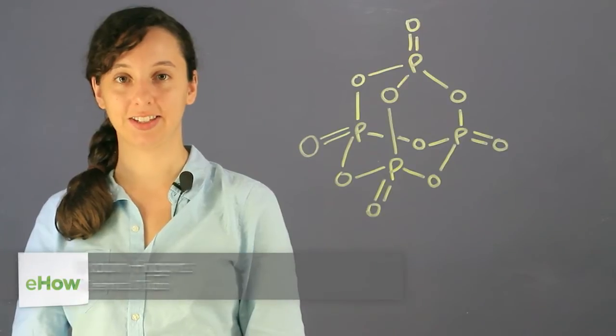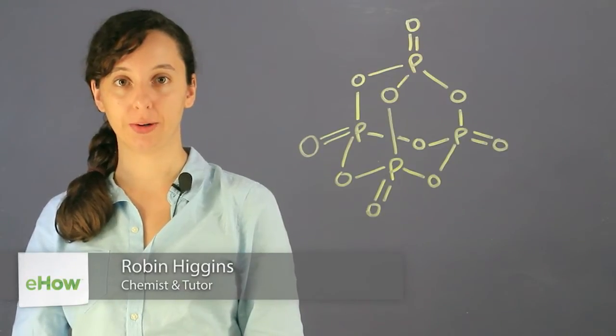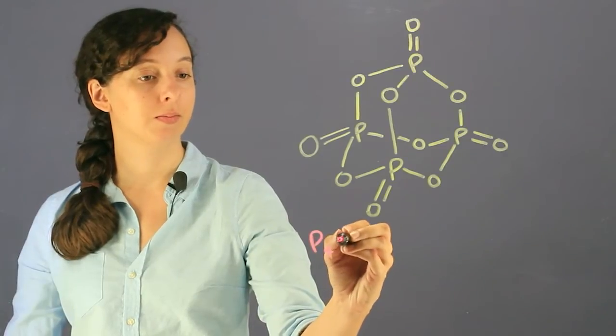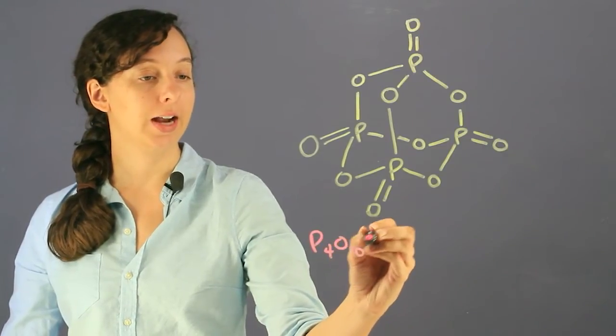Hi, I'm Robin Higgins and this is What is P4O10? The chemical symbol P4O10 actually creates this structure.